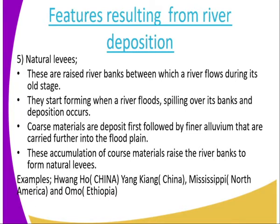The fifth feature, we have natural levees. These are raised river banks between which a river flows during its old stage. They start forming when the river floods, spilling over its banks, and deposition occurs. Coarse materials are deposited first, followed by the finer alluvium that is further carried into the flood plains. This accumulation of coarse materials raises the river banks to form natural levees.